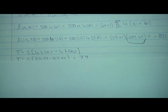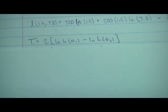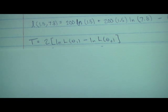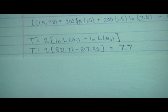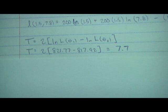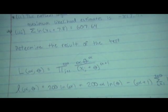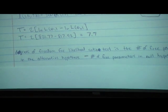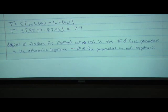Next, find the test statistic: T equals 2 times [ln L(θ₁) minus ln L(θ₀)], where θ₁ is the MLE over all possible values (alternative hypothesis) and θ₀ is the value maximizing the likelihood within the null hypothesis. So T equals 2 times (negative 817.92 minus negative 821.77), giving T equals 7.7. The degrees of freedom is the number of free parameters in the alternative minus the null: 2 minus 0 equals 2.